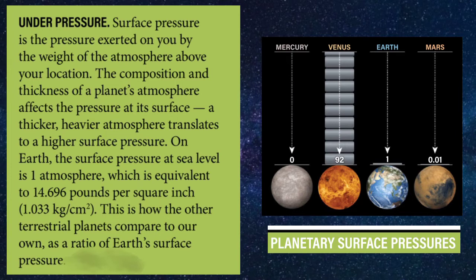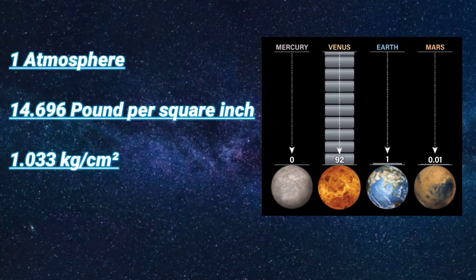The composition and thickness of a planet's atmosphere affect the pressure at its surface. A thicker and heavier atmosphere translates to a higher surface pressure. On Earth, the surface pressure at sea level is one atmosphere.